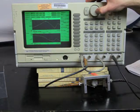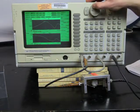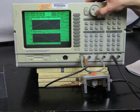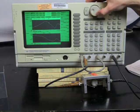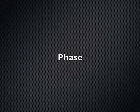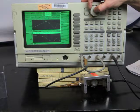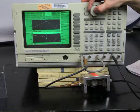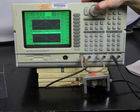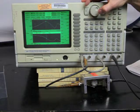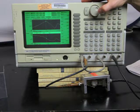And auto scale. Here's our peak. Now it's easier to measure the minus 3 dB down point on either side.